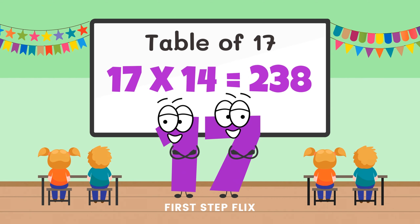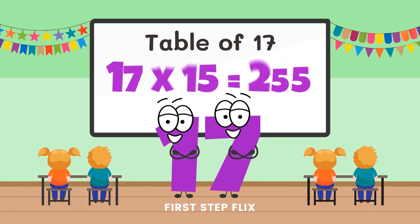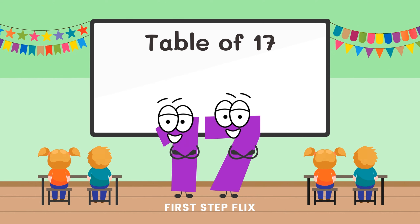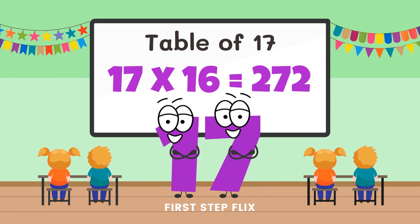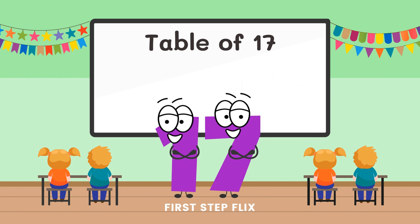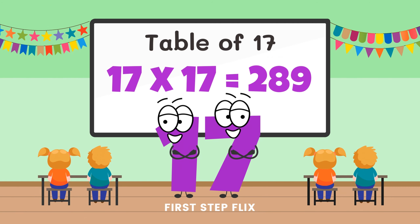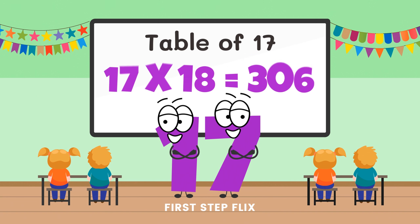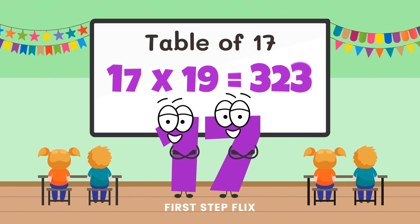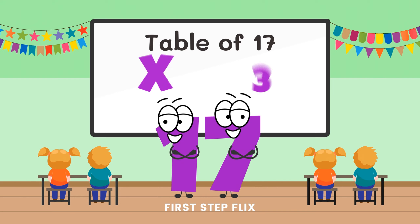17 fourteens are 238. 17 fifteens are 255. 17 sixteens are 272. 17 seventeens are 289. 17 eighteens are 306. 17 nineteens are 323. 17 twenties are 340.